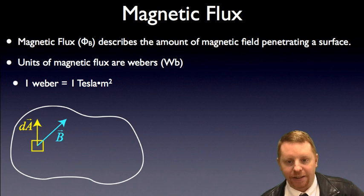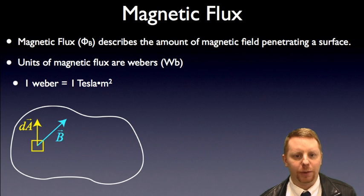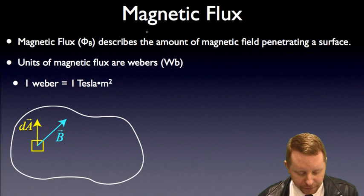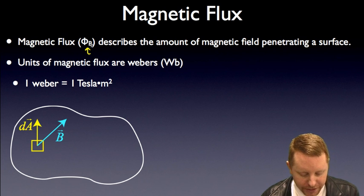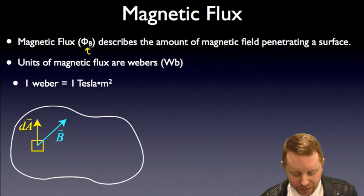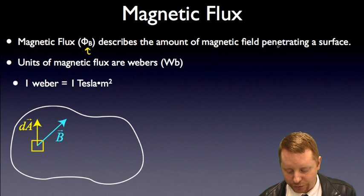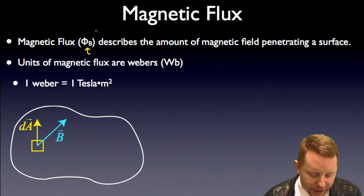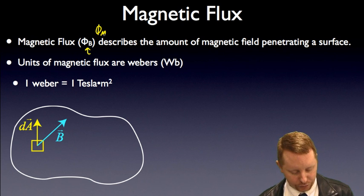Let's start off by talking about what magnetic flux is. Very similar to electric flux, magnetic flux, or φ_B, where the B denotes magnetic, describes the amount of magnetic field penetrating a surface. And note that sometimes you'll see that written as φ_m for magnetic as well.